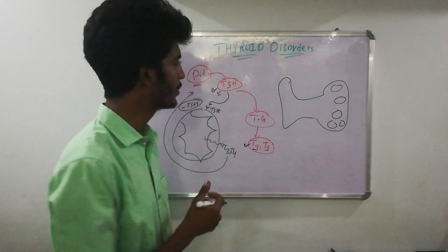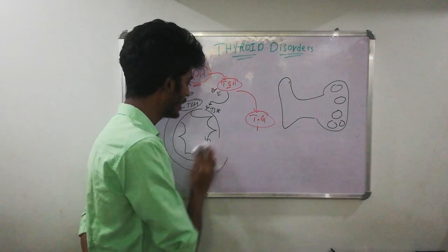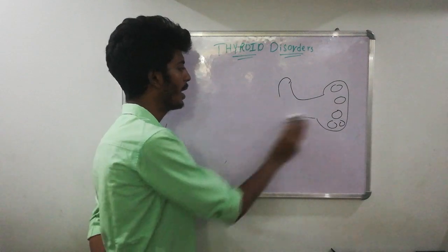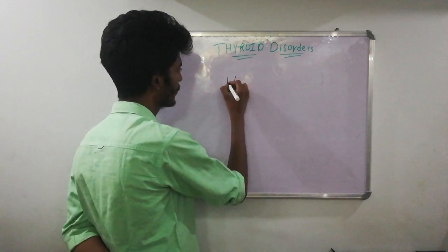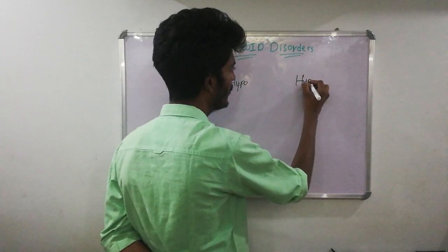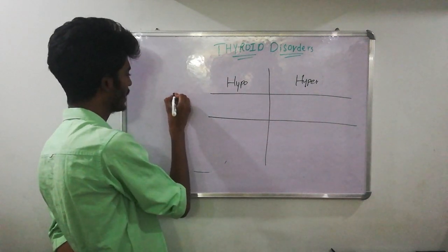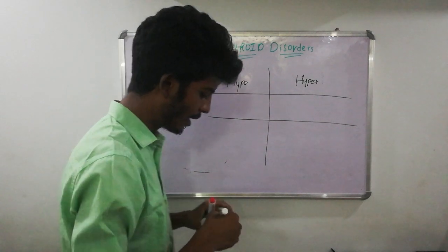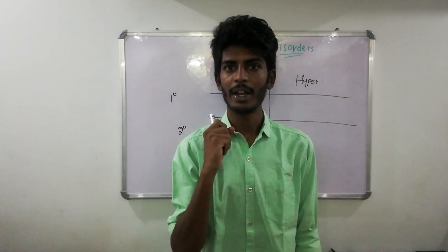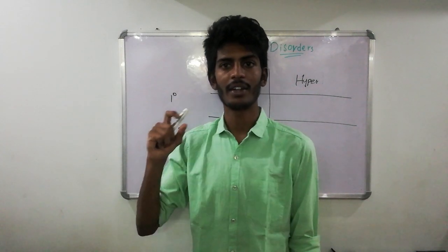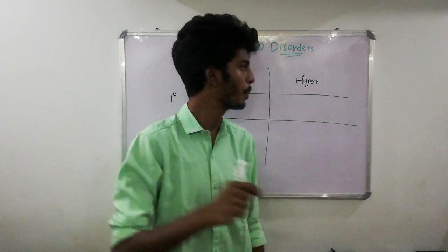Now that we understand the basic physiology, let's start with disorders of the thyroid gland. Whenever we talk about any gland, we can have two types of disorders — either hypo or hyper. For thyroid, we can have hypothyroidism and hyperthyroidism, meaning elevated levels of thyroid hormones. Beyond hypo and hyper, there is also an important distinction: primary versus secondary. Primary means the defect is located in the gland itself — either decreased or increased production of thyroid hormones.